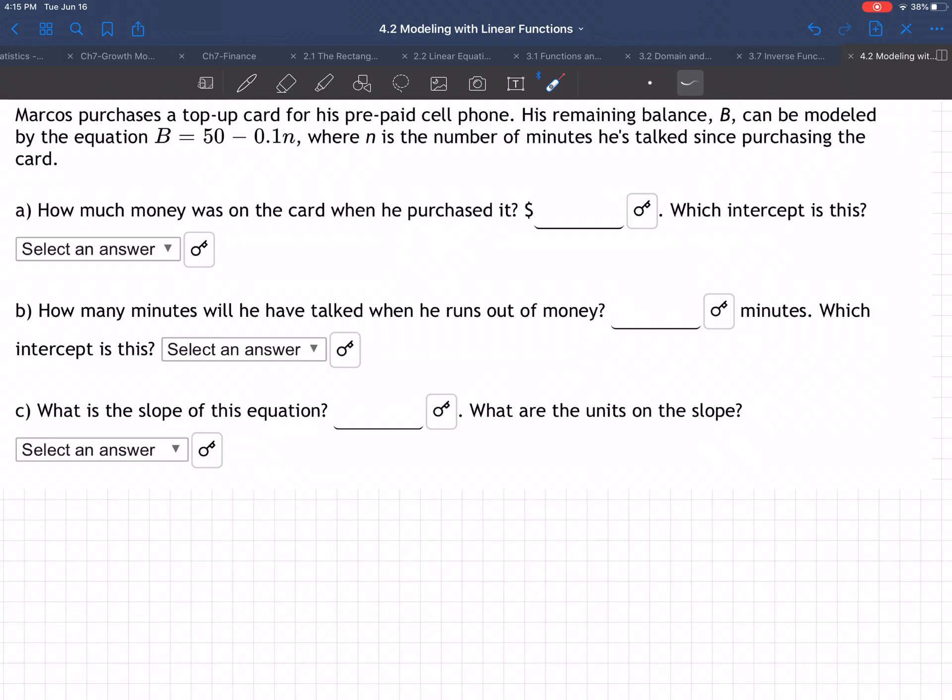Welcome to an example of linear equations and word problems. Marcos purchases a top-up card for his prepaid cell phone. His remaining balance, B, can be modeled by the equation B = 50 - 0.1N, where N is the number of minutes he's talked since purchasing the card.